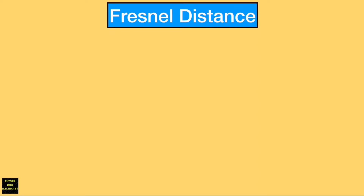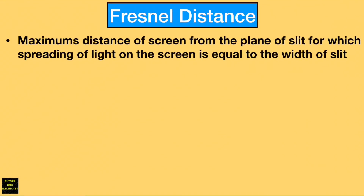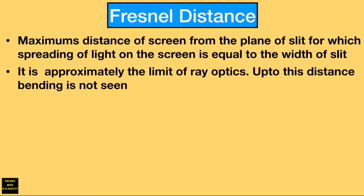We have seen that diffraction occurs at a single slit and the light spreads into the geometrical shadow region of the slit. The Fresnel distance is the maximum distance of a screen from the plane of the slit for which spreading of light on the screen is equal to the width of the slit. It means the light will not enter into the geometrical shadow region for this distance. If the distance of the screen is more than this distance, then only the light will spread into the geometrical shadow region. This is approximately the limit of ray optics.